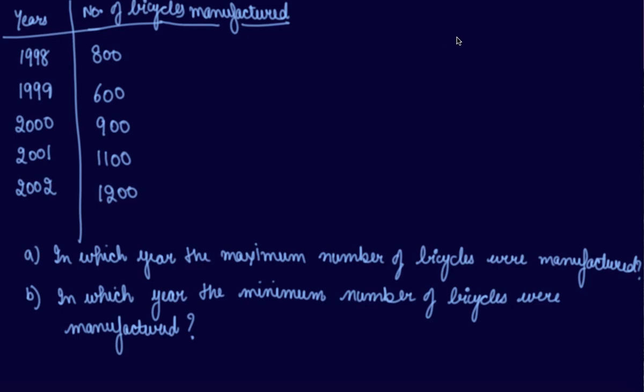This is the question. We are given the years and we are given how many number of bicycles were manufactured by the factory. So we are asked to draw a bar graph and choose a scale of your choice. We can see that 800, 600, 900, 1100, and 1200 are the number of bicycles manufactured.